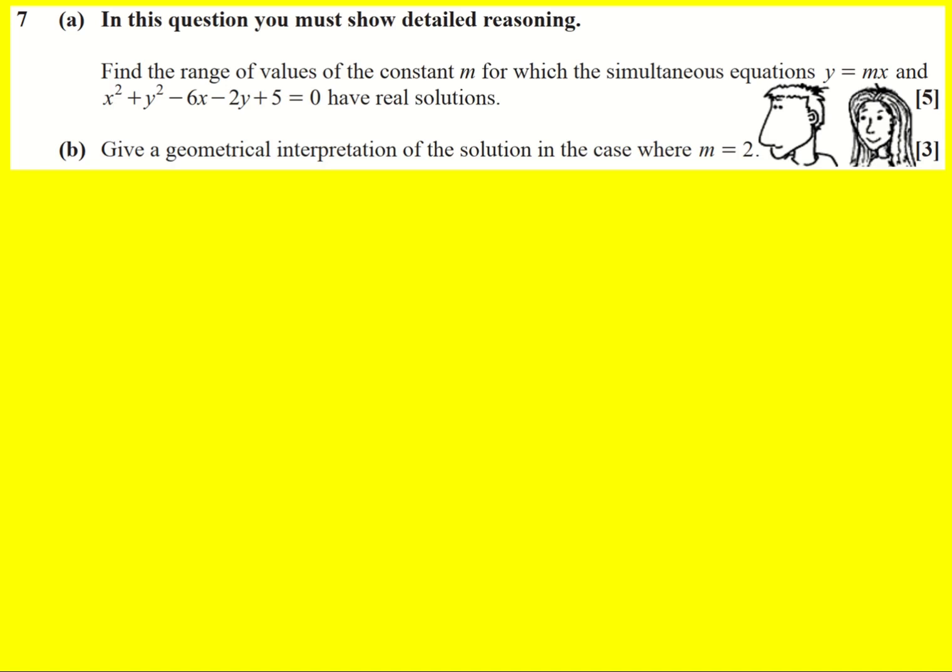This is my favorite question in the paper. We're asked to show detailed reasoning. We've got simultaneous equations but we're not actually trying to solve them, we're just trying to find the different values of m for which there will be real solutions.